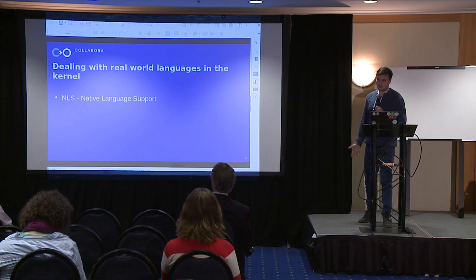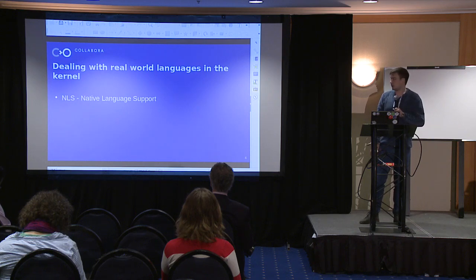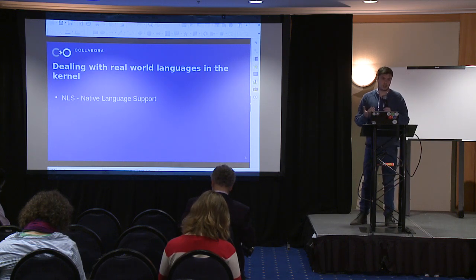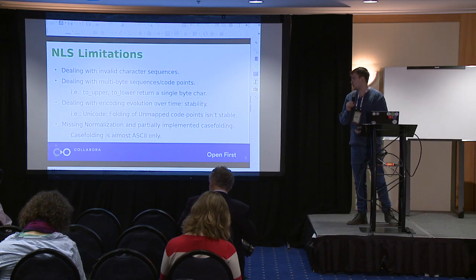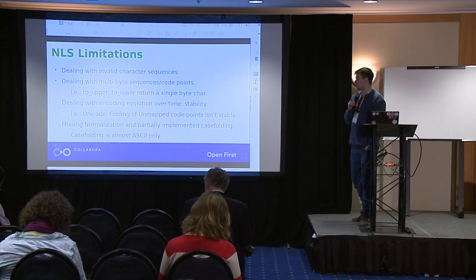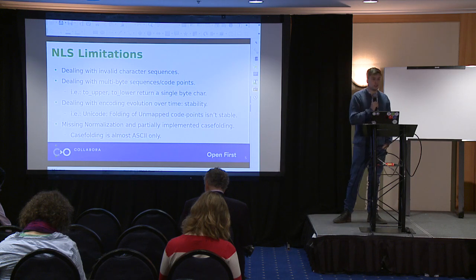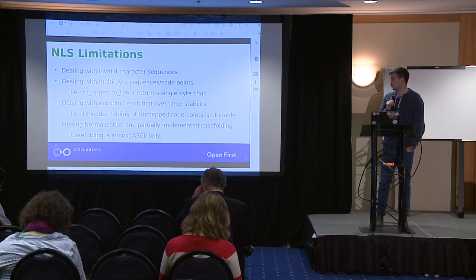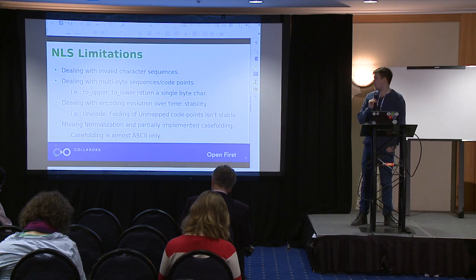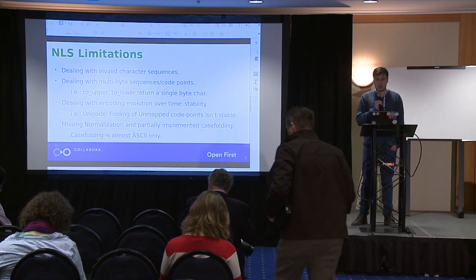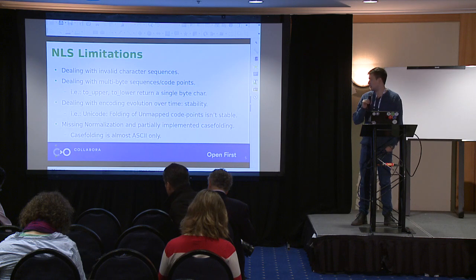There is already an effort in the kernel to handle character encoding — it's the NLS, Native Language Support. It exists inside the file system directly in the kernel. But it falls short when you're doing anything more complex with encodings or supporting different cases. It has trouble dealing with invalid character sequences. So what happens when you ask the NLS to convert a character that's not mapped in that character set? Well, primarily it will just return zero in some cases, in others it won't — so you have inconsistent behavior there.